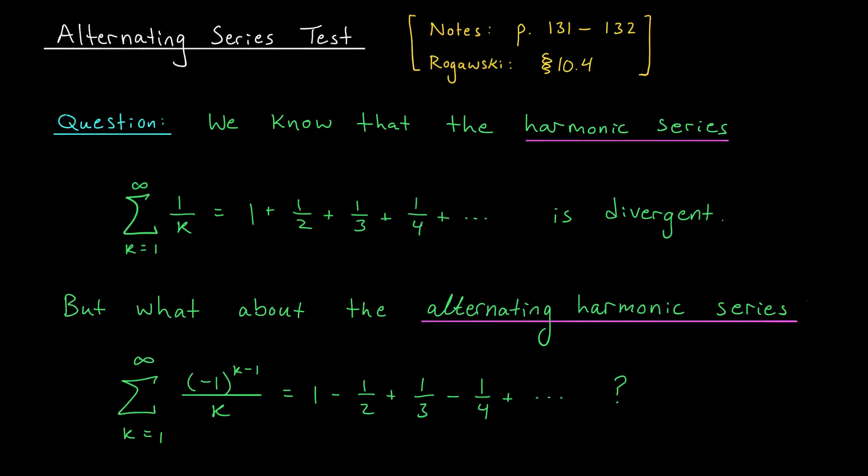Hi everyone, and welcome back. Last week when we began our discussion on infinite series, we saw this very famous example, the harmonic series. This is the sum of reciprocals of natural numbers: 1 over 1 plus 1 over 2 plus 1 over 3, and so on. We showed that this series diverges.